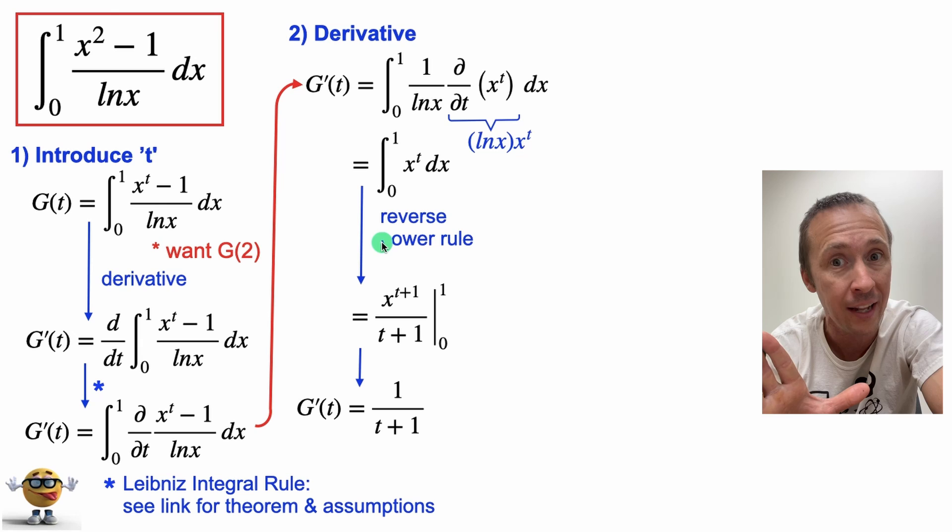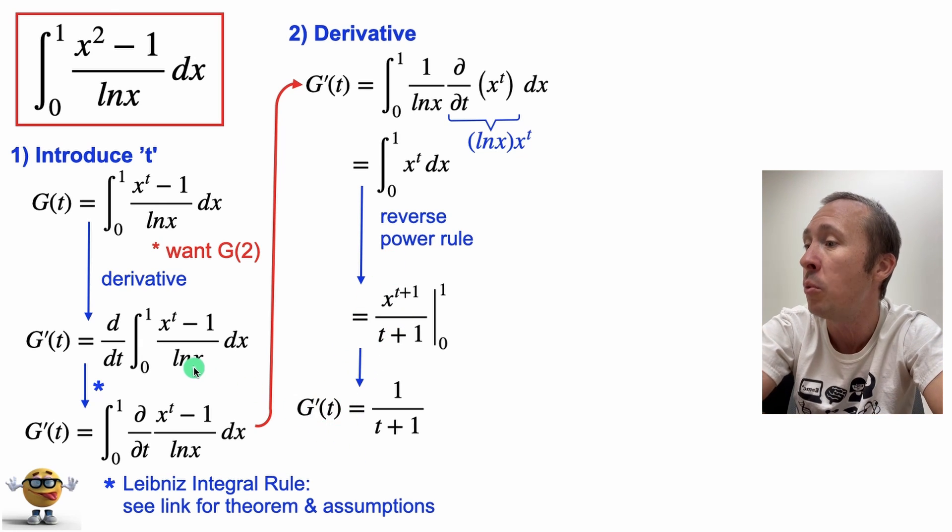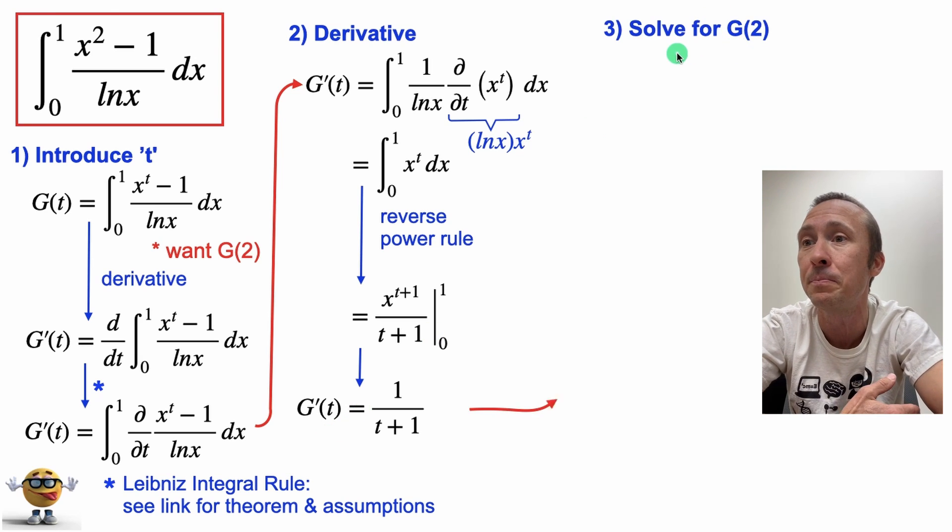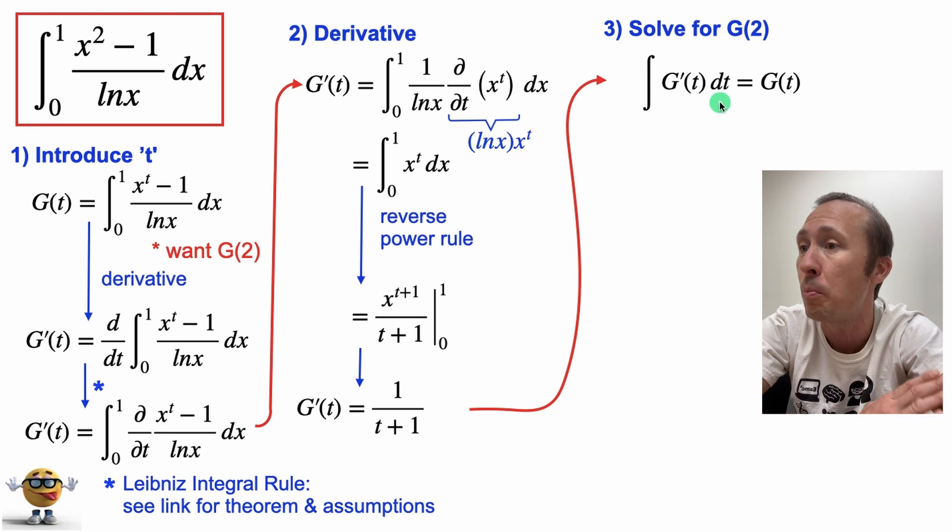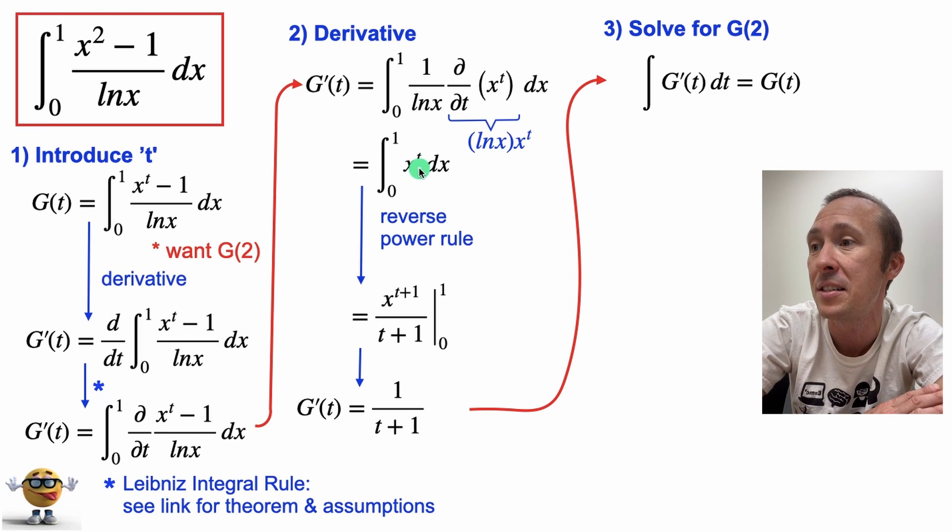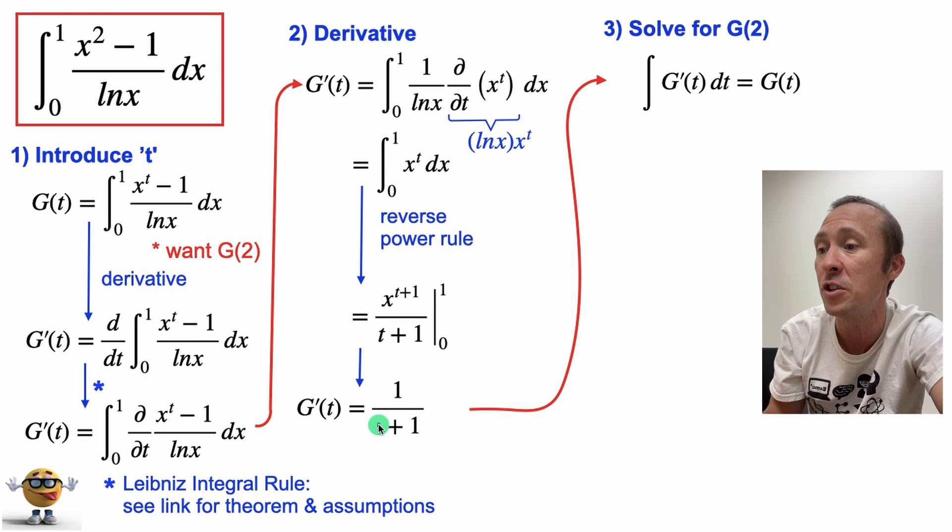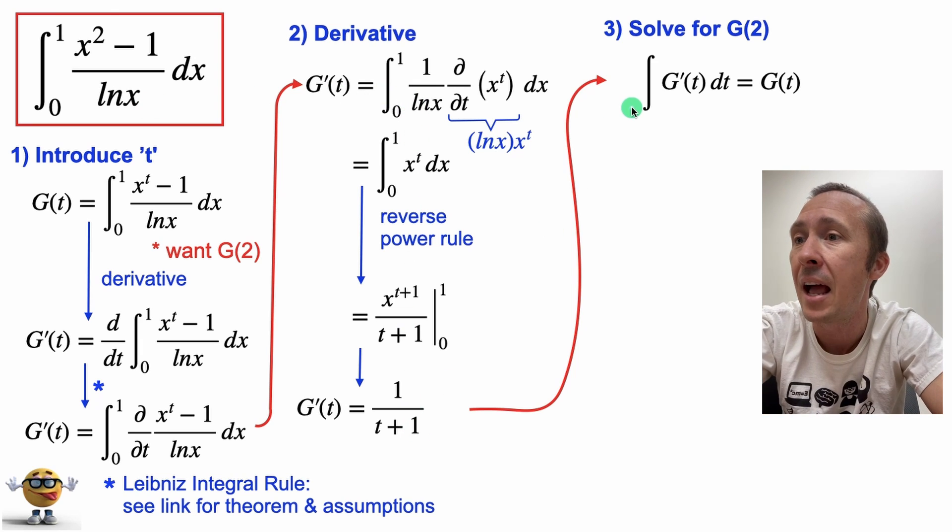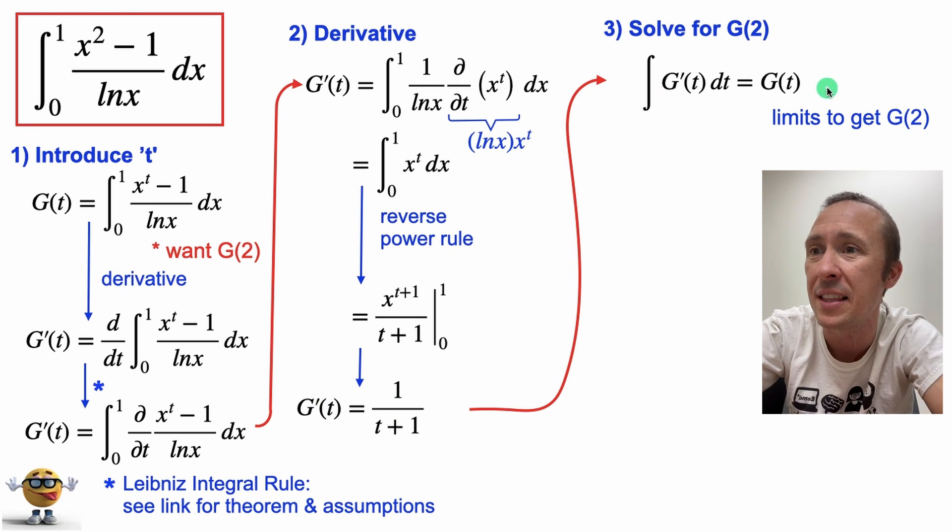Now it's not the integral we want yet—this integral gave us g prime of t. We want g of 2, really. We want to integrate g prime of t, and this is part of the trick. We introduced some parameter, took the derivative of that integrand, which simplifies to an easier integral, but now we have to do another integral. So we traded a harder integral with two easier ones right here.